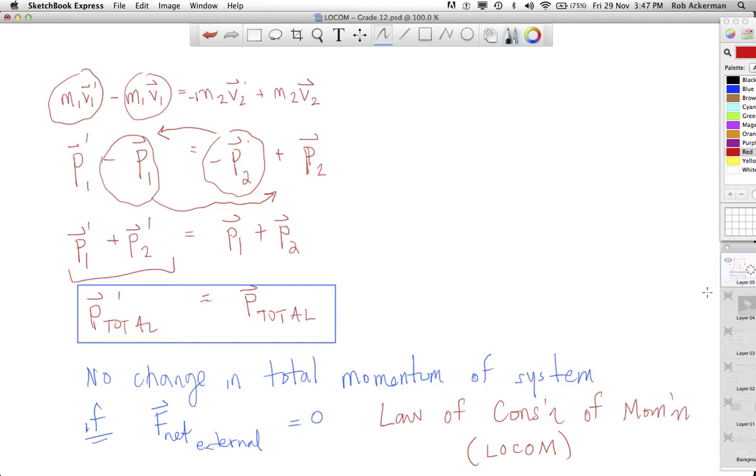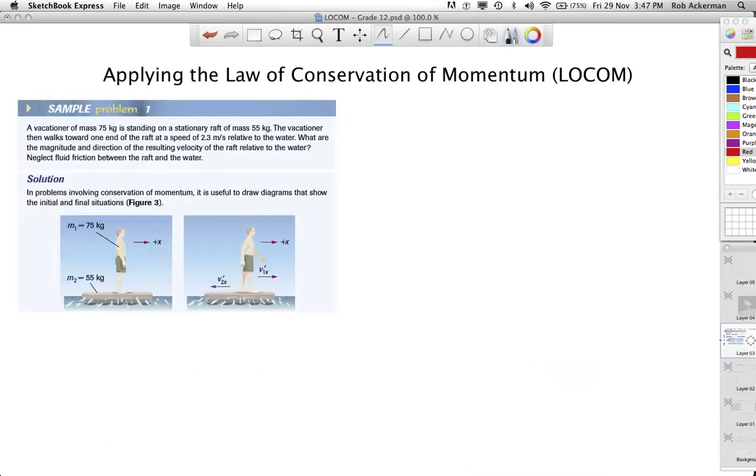So let's see if we can apply this to a textbook question. Here's a question out of your textbook. It's Physics 12 by Nelson, and it's in section 5.2. It's one of the sample problems. A vacationer, 75 kilograms, is standing on a raft, 55 kilograms, as you see in the diagram here. Not moving, stationary. All of a sudden, he begins walking to the right with a speed of 2.3 meters per second. What's going to happen to the raft? Well, pause the video for a moment and see if you can predict what will happen. If you've ever been on a raft, or if you've stood up in a canoe, or even the same thing kind of happens if you're standing on something like a skateboard, and you start walking one way, what's going to happen? Pause the video and predict.